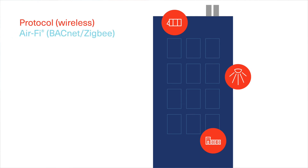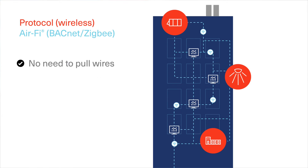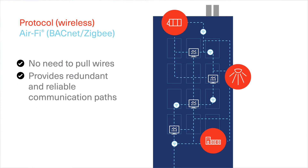For wireless connectivity, Trane offers AirFi Wireless. AirFi runs BACnet protocols over a Zigbee self-healing mesh. This is a great option if you're in an existing building and can't easily modify wires. Also, with AirFi Wireless, there are redundant communication paths, increasing network reliability.